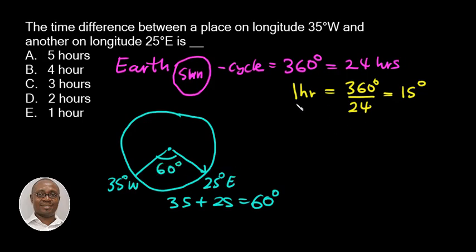So remember that one hour is equal to 15 degrees. So that implies that the number of hours, which is x, will be equal to, we just divide 60 by 15 degrees.